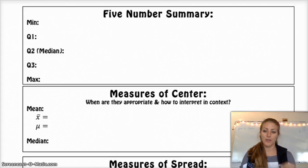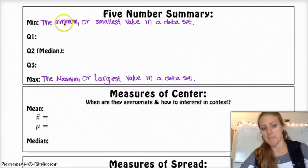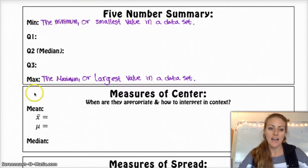The three that you've probably heard of are the minimum, the median, and the maximum value in the data set. The min is the minimum or smallest value in the data set, and then the max is the maximum or largest.